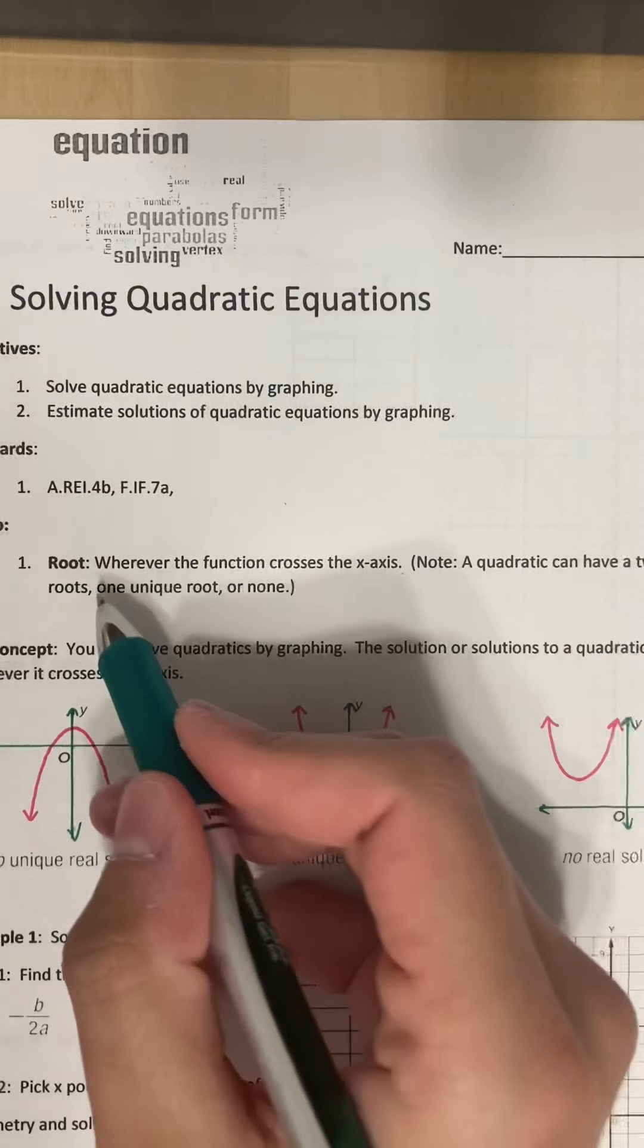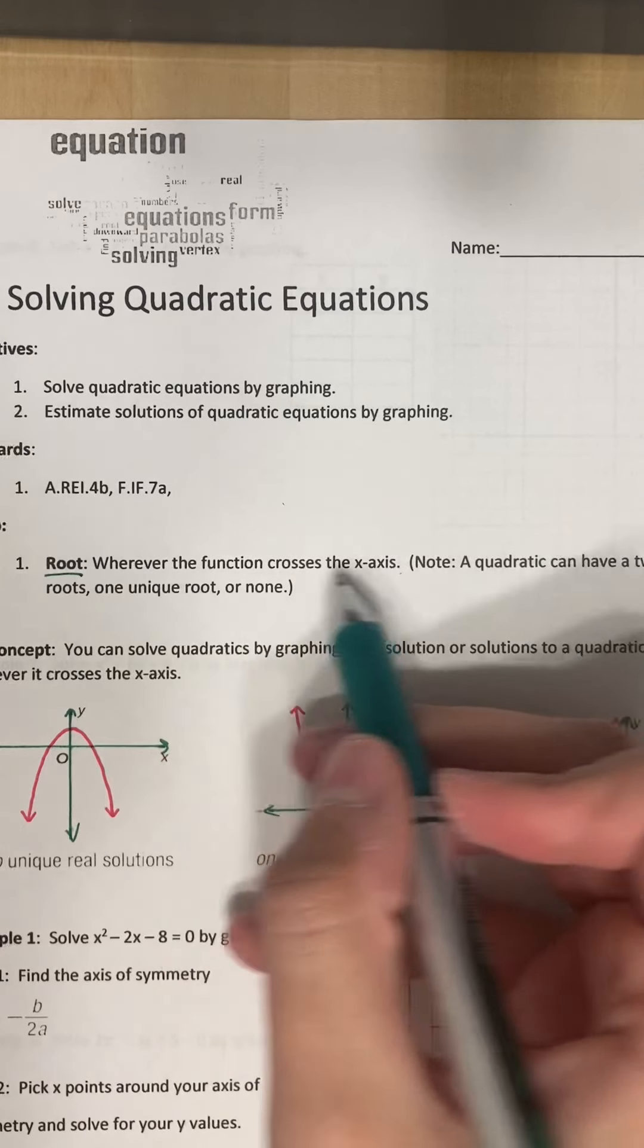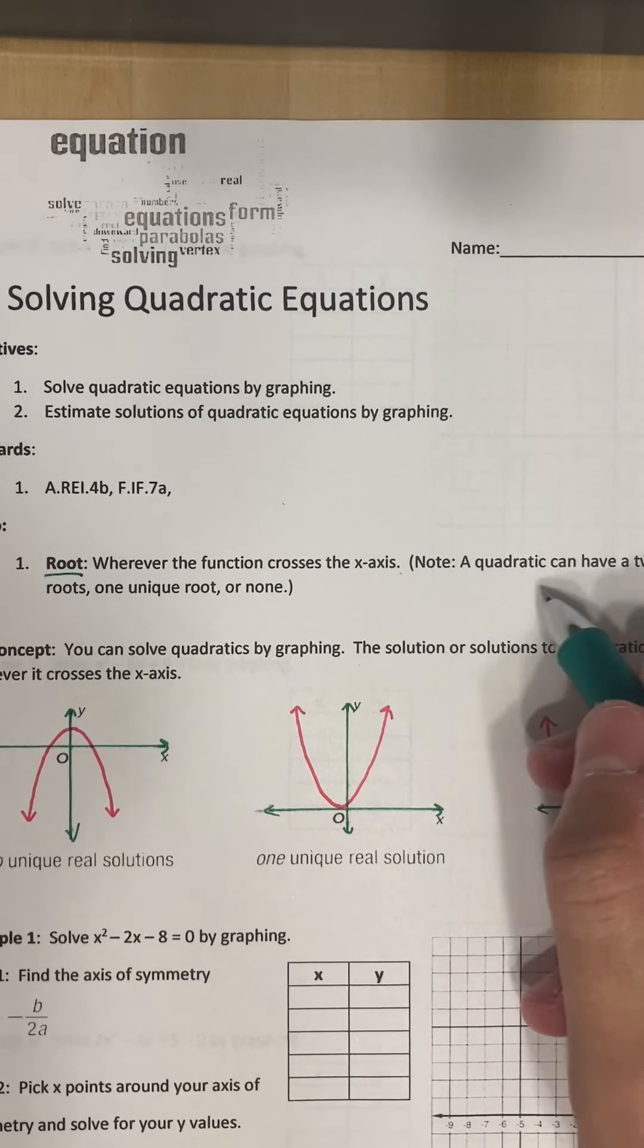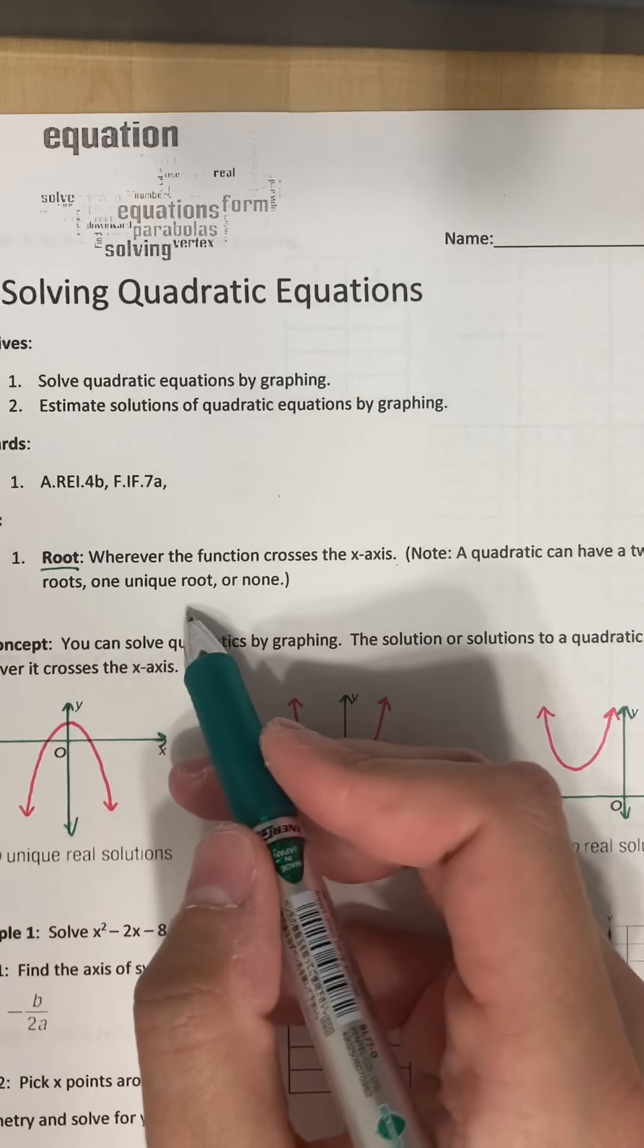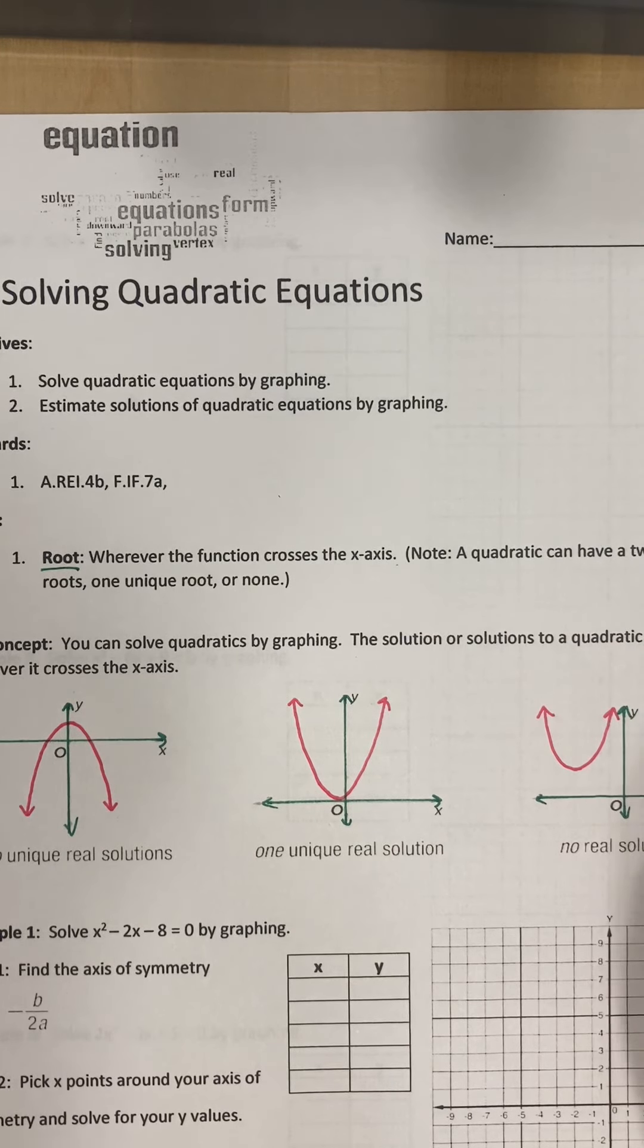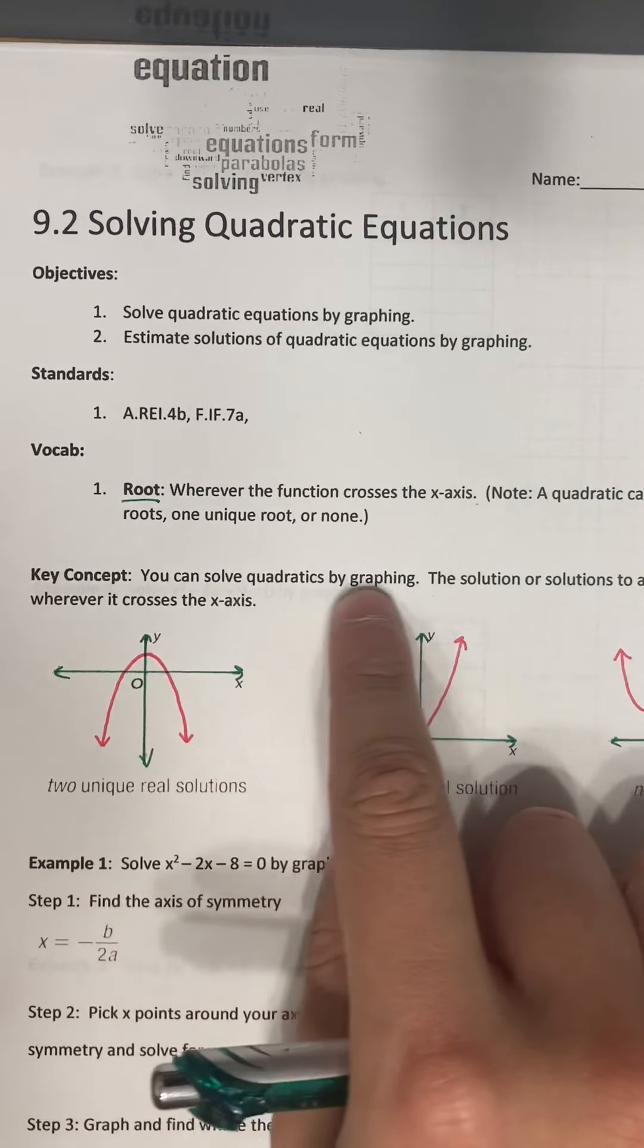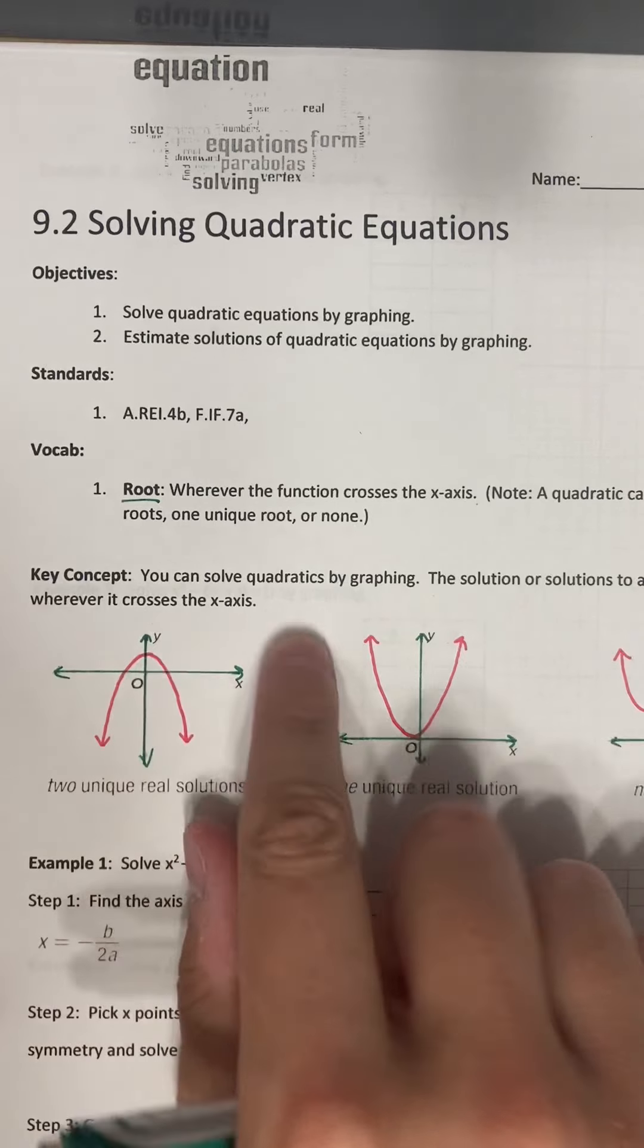So let's take a look at the vocab here, the word root. It says wherever the function crosses the x-axis. So note, it says the quadratic can have two unique roots, one unique root or none. Keep that in mind. If you look here at these examples, it says you can solve quadratics by graphing. The solution or solutions to a quadratic equation is wherever it crosses the x-axis.